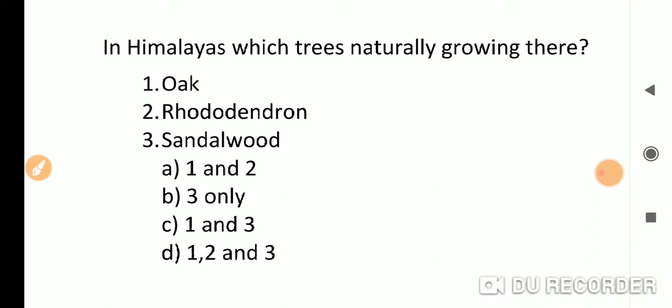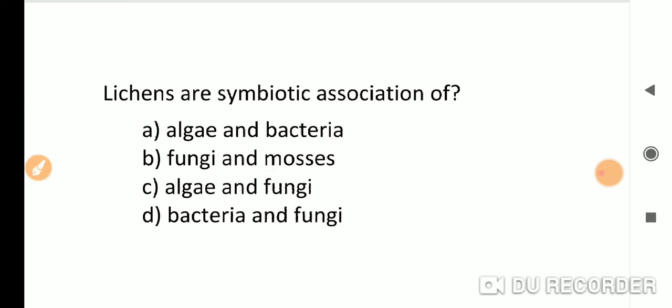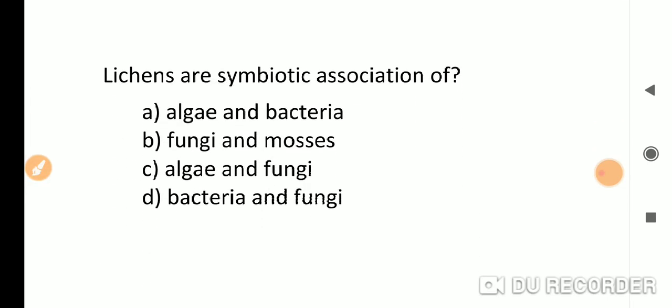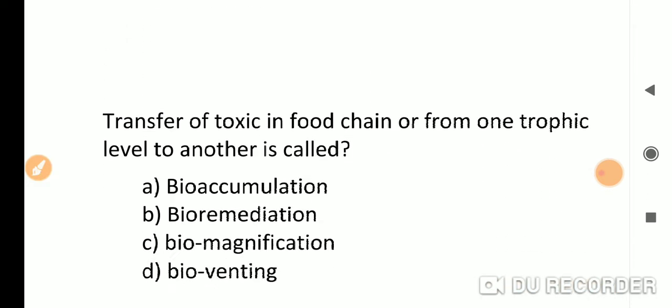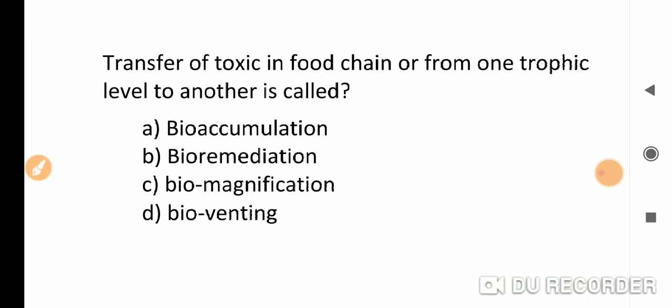Lichens are symbiotic association of algae and fungus, and they are indicators of air pollution. Next: transfer of toxins in food chain.